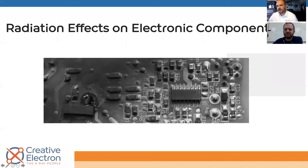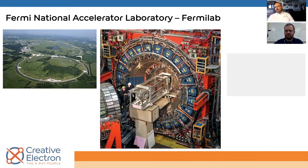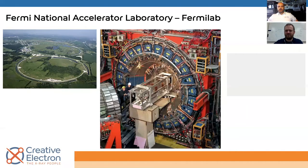The question we're going to try to address today is if radiation can damage electronic components. I'll start with some background on where I learned a lot about radiation effects on electronic components — that was at Fermilab, the Fermi National Accelerator Laboratory. It's a particle accelerator about 40 miles west of Chicago. At Fermilab we had a six-mile long ring called the Tevatron, which you can see here in this photograph.